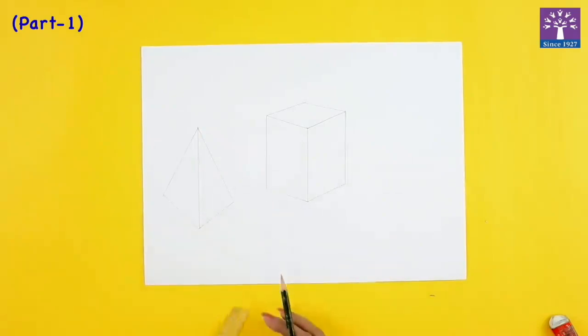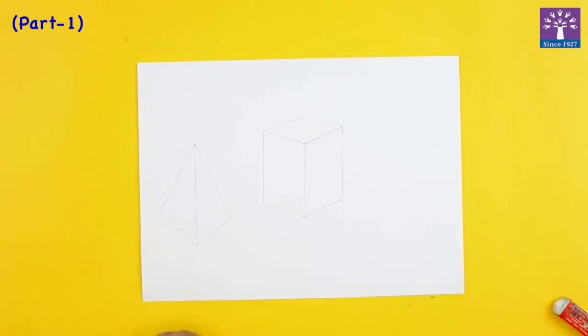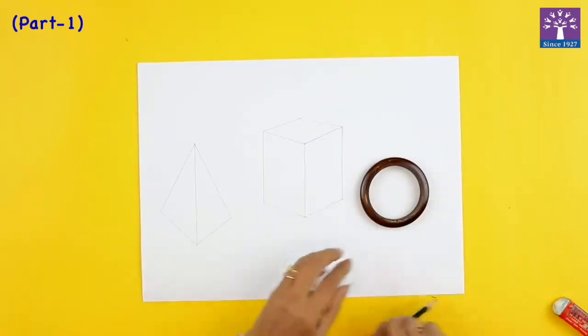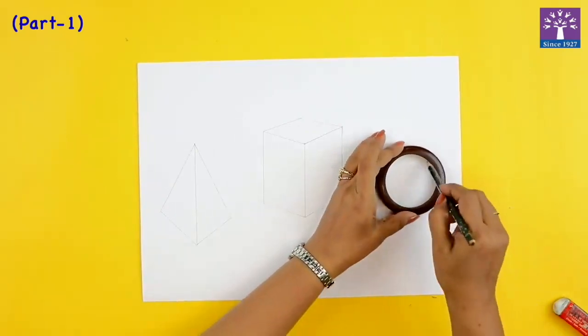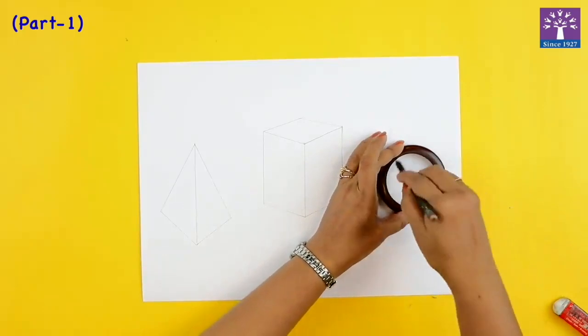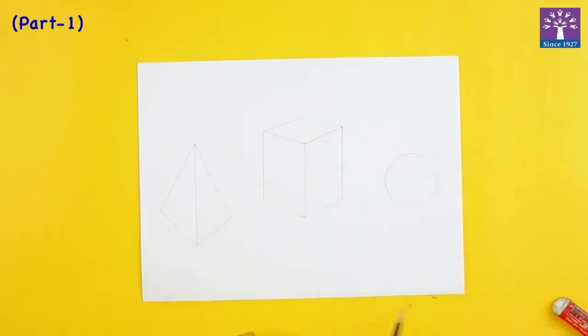So this is sort of a pyramid. I'll draw a sphere. If you can draw it freehand then well and good. If not then you can use any circular object that you have, place it and just go over. Or if you want you can draw freehand.